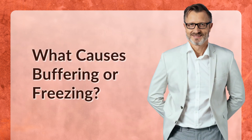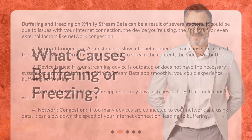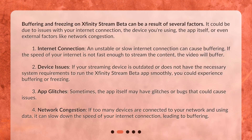What causes buffering or freezing? Buffering and freezing on Xfinity Stream Beta can be a result of several factors. It could be due to issues with your internet connection, the device you're using, the app itself, or even external factors like network congestion. An unstable or slow internet connection can cause buffering. If the speed of your internet is not fast enough to stream the content, the video will buffer.